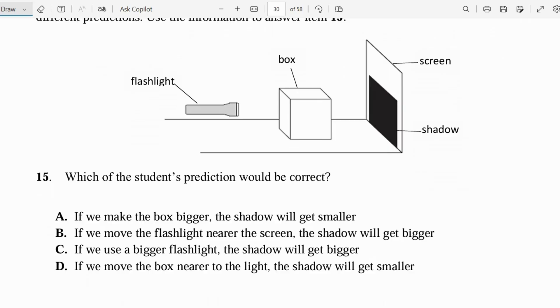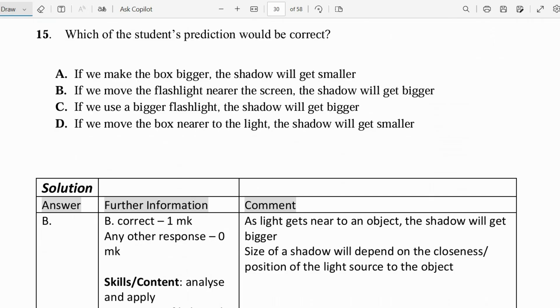When we are using the projector, many of us see our teachers setting up the projectors at school. Is it that when we move the projector closer towards the board, the window on the projector gets larger, or if we move it farther it gets larger? So these are investigations we can see in our daily lives and see how they operate in the similar way this diagram would operate. B is correct: if we move the flashlight nearer to the screen, the shadow will get bigger, because as light gets near to the object, the shadow will get bigger. The size of the shadow will depend on the closeness or the position of the light source to the object.